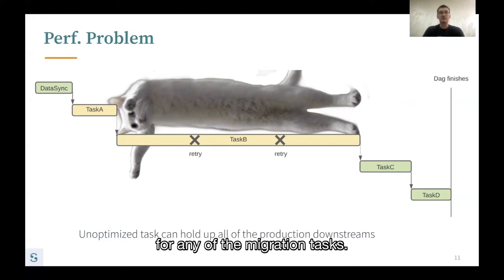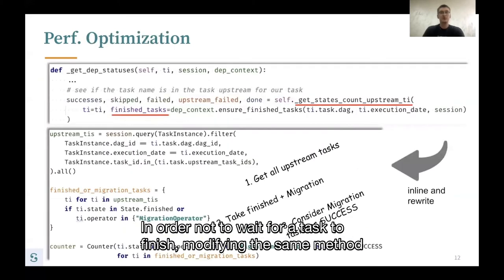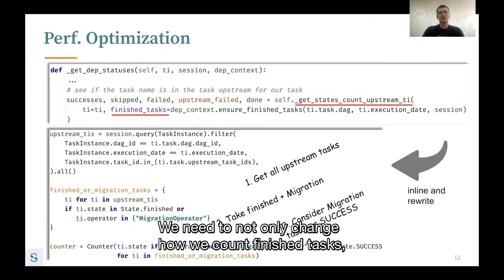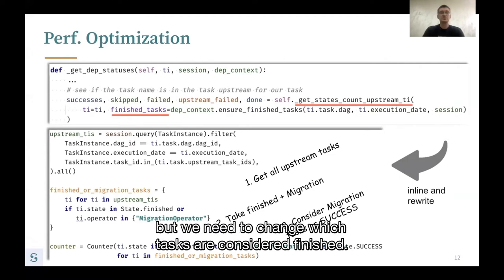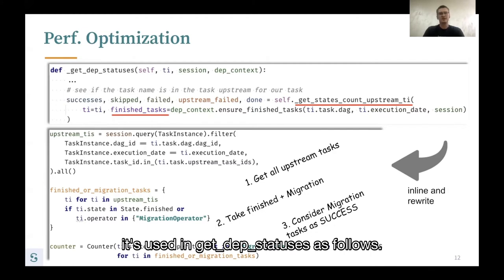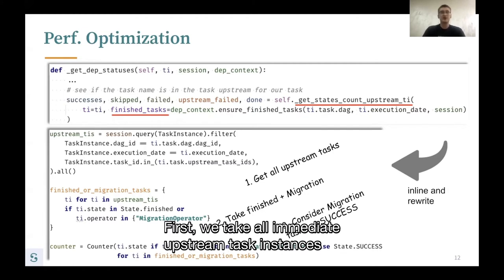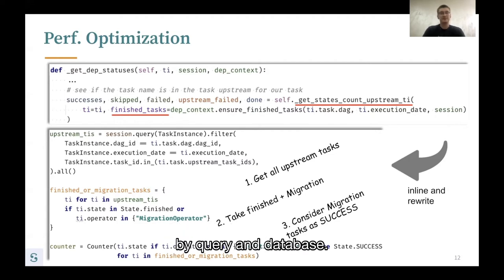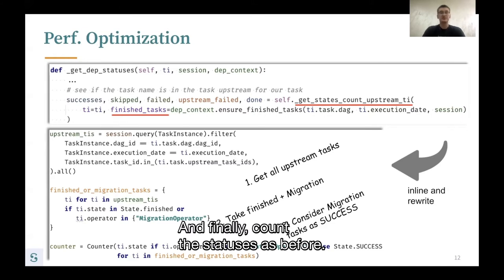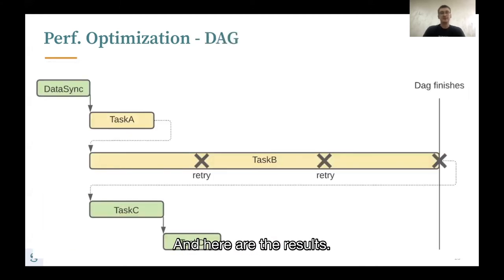Ideally, none of the production tasks would have to wait for any of the migration tasks. In order not to wait for a task to finish, modifying getStatesCountUpstreamTI is not enough, as it only accepts already finished tasks. We need to change which tasks are considered finished — we inline this method and rewrite the whole section in getDepStatusAssess: first, take all immediate upstream task instances by querying the database; then filter out just those that have finished or are migration tasks; and finally count the statuses as before, always treating migration task state as success. Migration tasks no longer hold up downstream tasks.